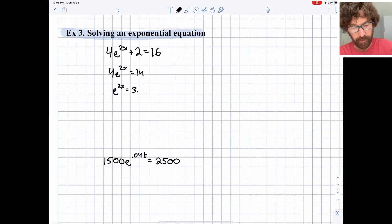So I will get 4 e to the 2x equals 14, meaning e to the 2x once we divide by 4 is 3.5. So I've dealt with sort of the outlying stuff, the times 4 and the plus 2. We've pared it down to a pretty pure exponential.